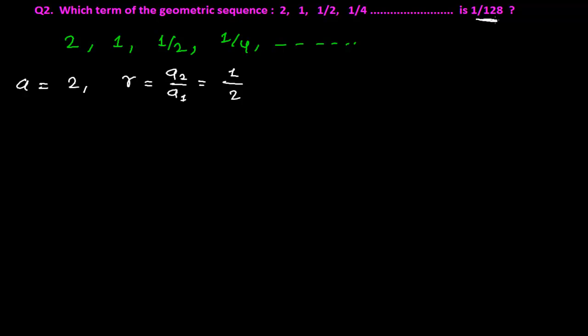Now we need to find out which term of this geometric sequence is 1/128. Which term is it? It may be the 32nd term, the 14th term, the 60th term—it may be any term, I don't know. That I have to find out exactly. So I can suppose that the nth term is 1/128.